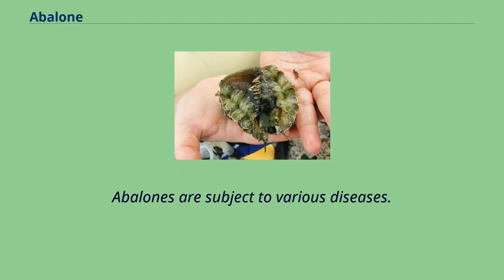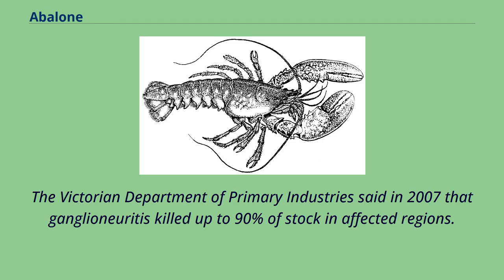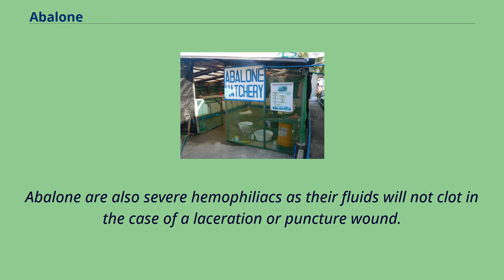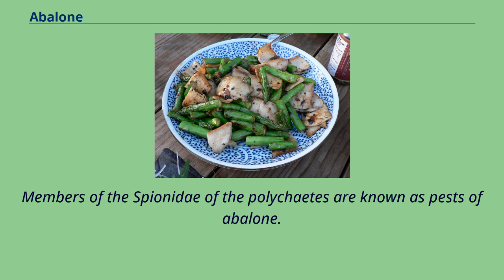Abalones are subject to various diseases. The Victorian Department of Primary Industries said in 2007 that ganglioneuritis killed up to 90% of stock in affected regions. Abalone are also severe hemophiliacs, as their fluids will not clot in the case of a laceration or puncture wound. Members of the Spionidae of the polychaetes are known as pests of abalone.